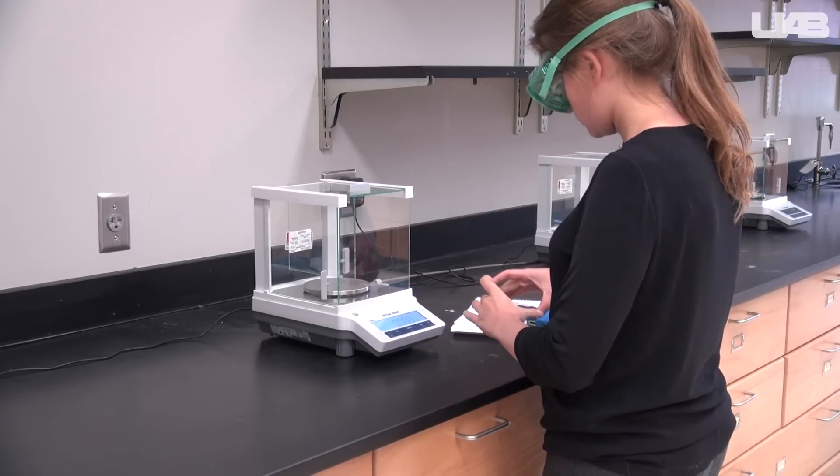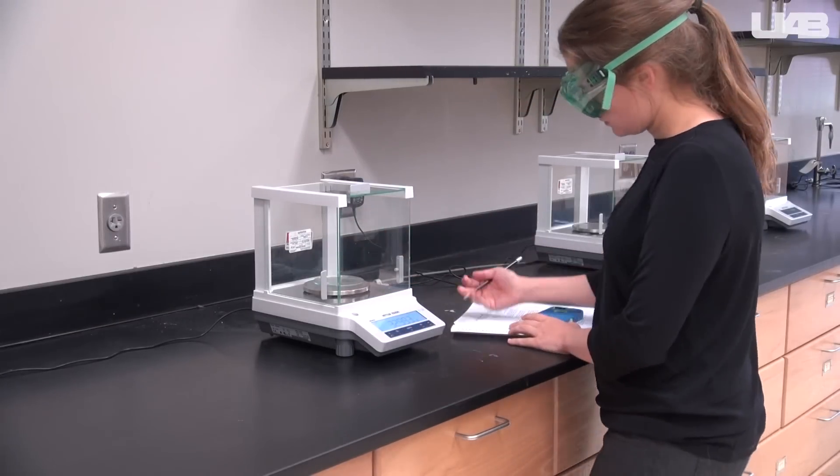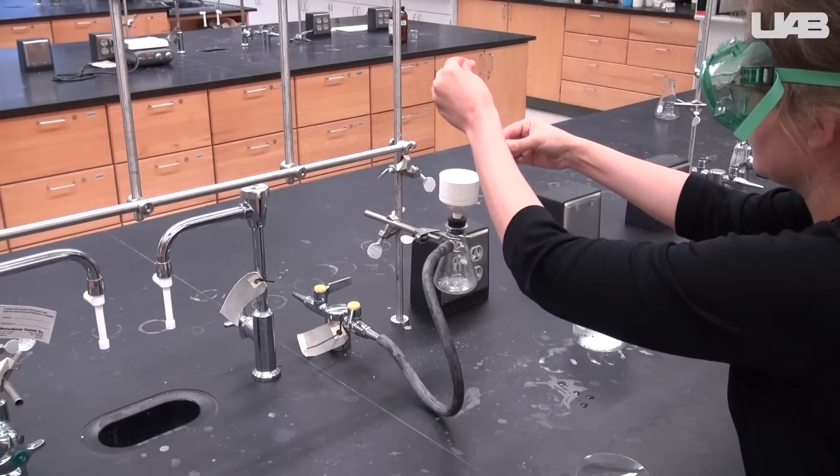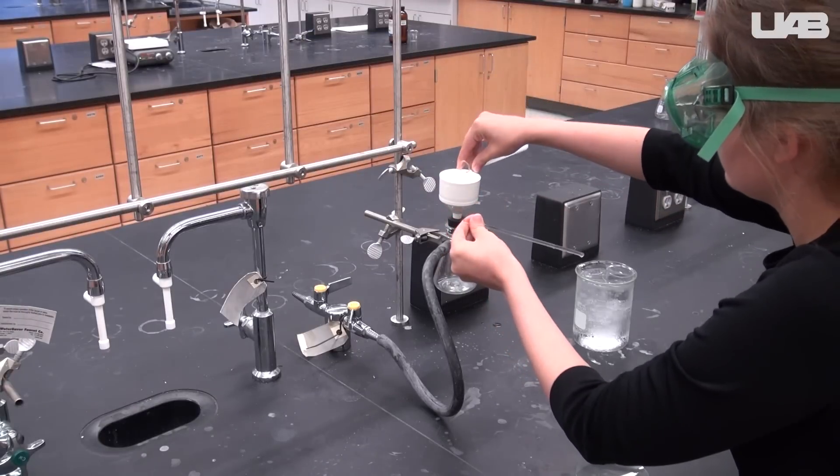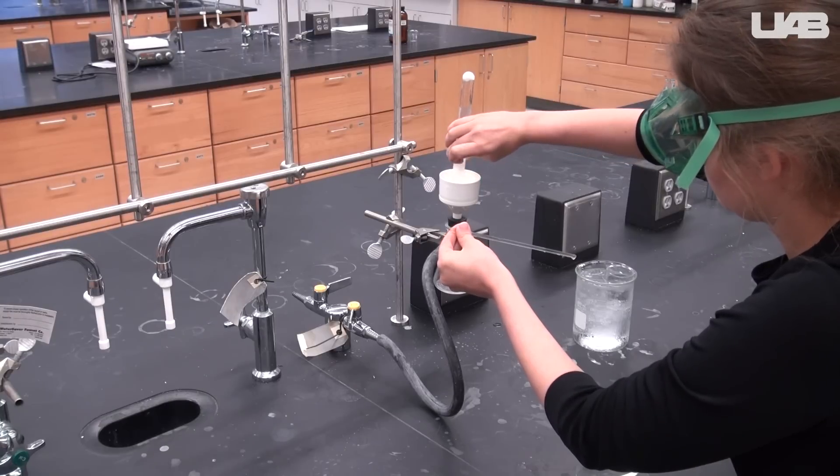We will isolate the aspirin crystals by using a Buchner funnel. Before you do this, determine the mass of a watch glass and record it in your notebook. We have used a Buchner funnel earlier in the semester, so if you don't remember how to use the funnel, review the milk lab video to refresh your memory.